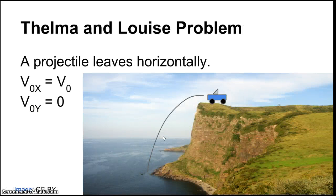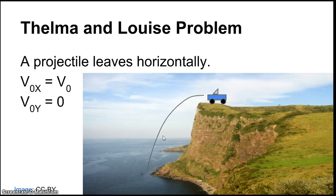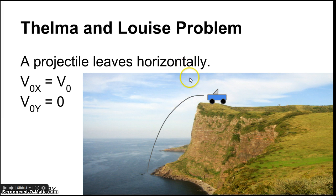With projectiles, we'll be learning two different types of problems. The first is the 'Thelma and Louise' type problem. What's special about it is that your horizontal velocity V₀ₓ is the same as your overall velocity, because you're driving straight horizontally off a cliff. Your vertical component of velocity is zero because you're not moving up or down initially, and your path curves downward from there.